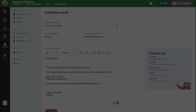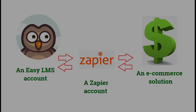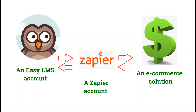To recap, if you want to make this work in an automated way, you will need an EasyLMS account that allows integrations, an online payment tool, and a Zapier account to set up the integration between the two.